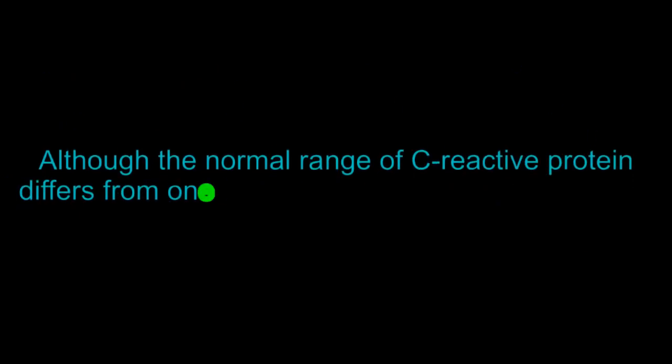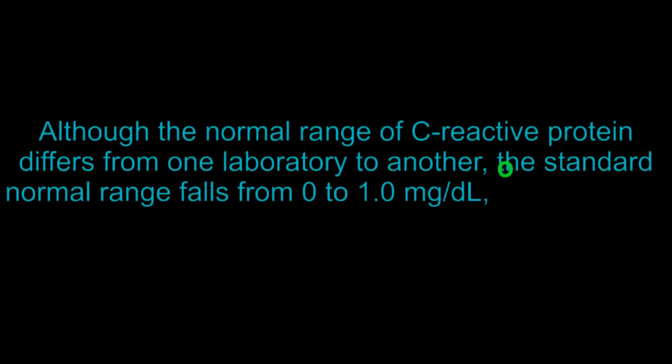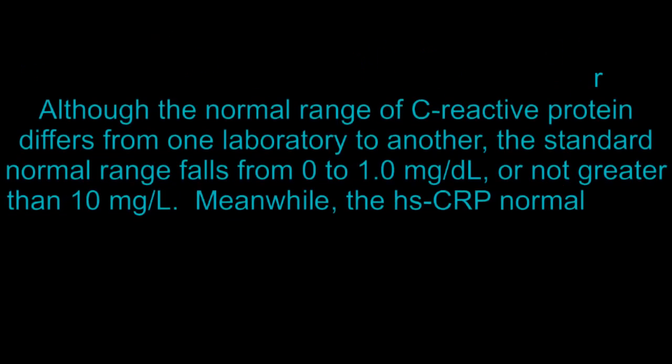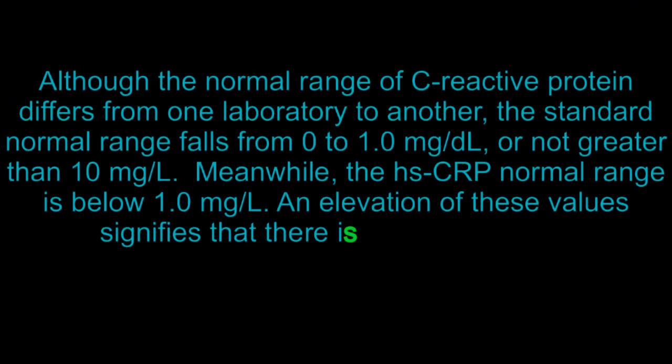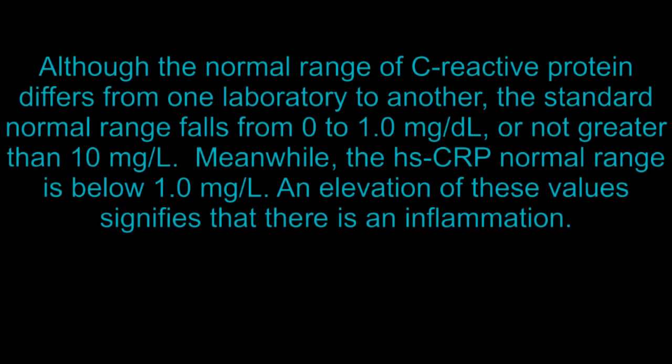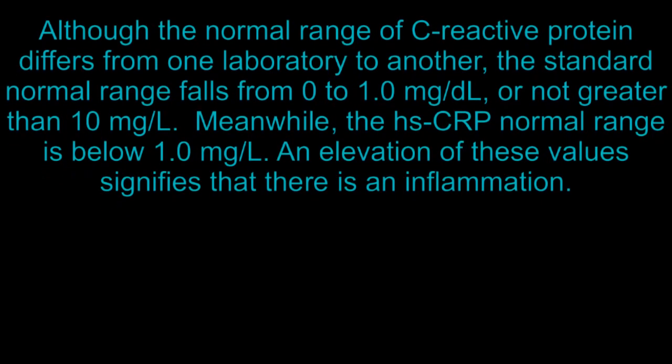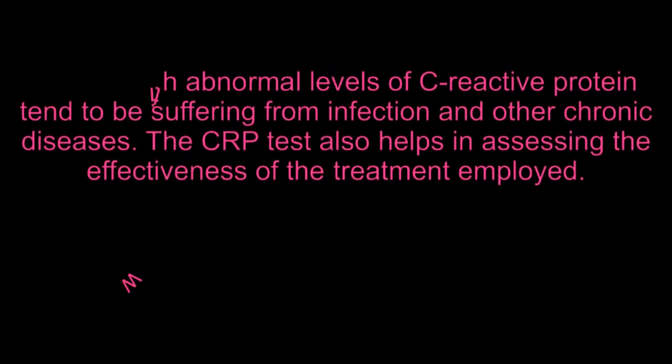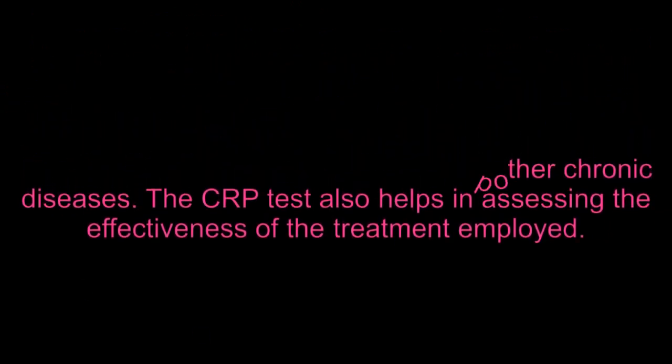Although the normal range of C-reactive protein differs from one laboratory to another, the standard normal range falls from 0 to 1.0 mg/dL, or not greater than 10 mg/dL. Meanwhile, the HSCRP normal range is below 1.0 mg/dL. An elevation of these values signifies that there is an inflammation. People with abnormal levels of C-reactive protein tend to be suffering from infection and other chronic diseases. The CRP test also helps in assessing the effectiveness of the treatment employed.